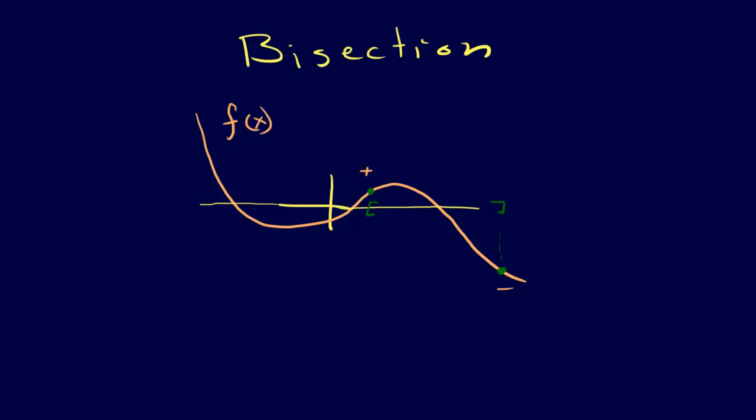The next thing that we do is we chop the interval in half. Let's say this is the halfway point. Then what we do is we evaluate the function at this point here and look to see if it's positive or negative. This happens to be positive. Because it's positive, we establish a new bracket. Our new bracket goes between this point and our negative point. Since these were both positive, we throw this out, and our new bracket is here.